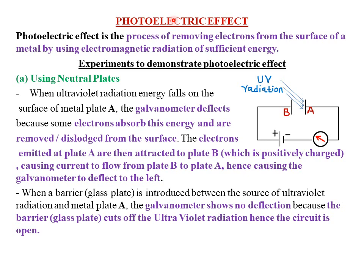So what is photoelectric effect? The word photoelectric is derived from two words: photo, which simply means light — a particle of light is called a photon — and electric, which is simply the flow of electrons or current. Therefore, photoelectric effect deals with the ejection or emission of electrons from a metal plate by use of light or radiation of sufficient energy. In simple terms, it is the process of removing or ejecting electrons from the surface of a metal using electromagnetic radiation of sufficient energy.